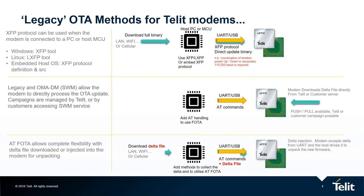Legacy OTA methods for Telit modems — these are the different ways to push firmware down onto the device. In the first example, you have a microprocessor or host PC connected directly via UART or USB to the Telit module. This is the normal method of working. You download the full binary from the download zone, then use the XFP tool on Windows or LXFP on Linux. If you have a host microprocessor you can also embed the XFP protocol. It's a simple protocol that works over UART or USB and pushes the firmware into the modem. The binary delivered is a full-size binary.